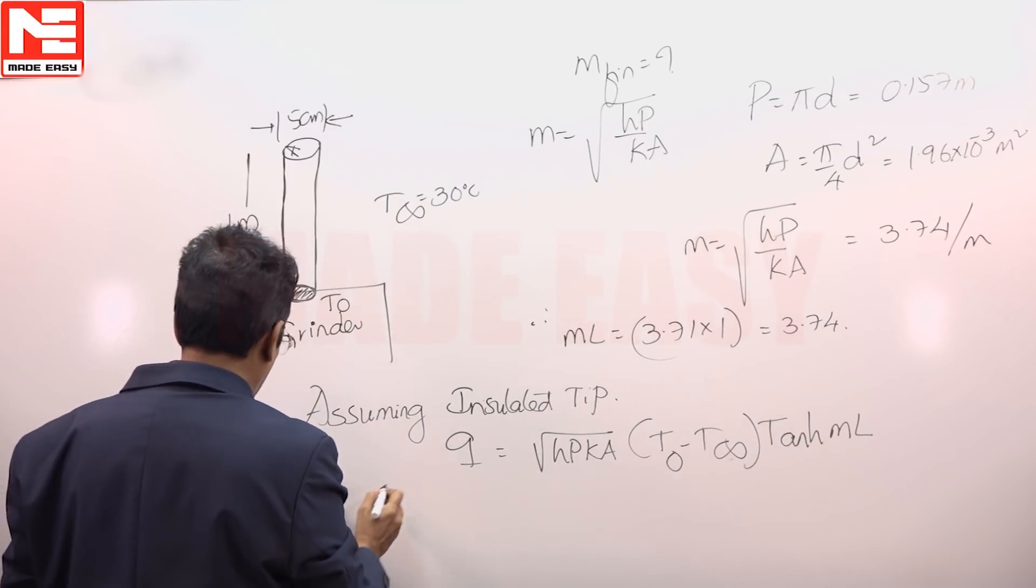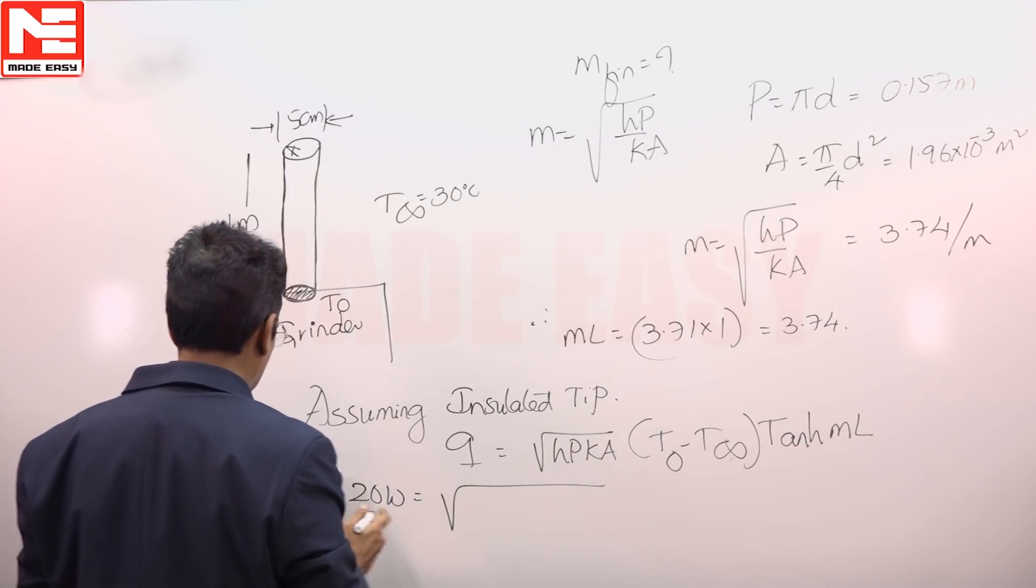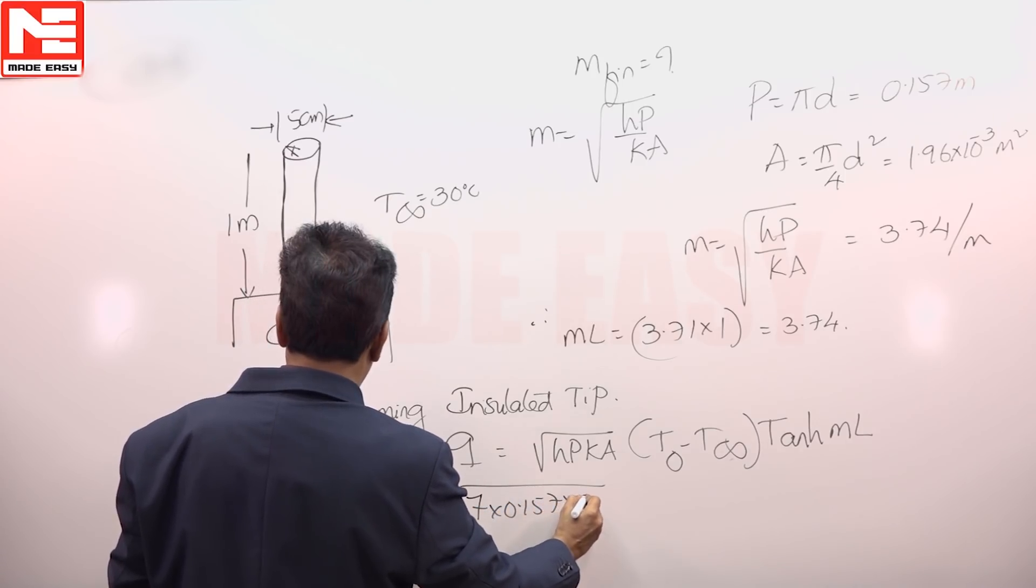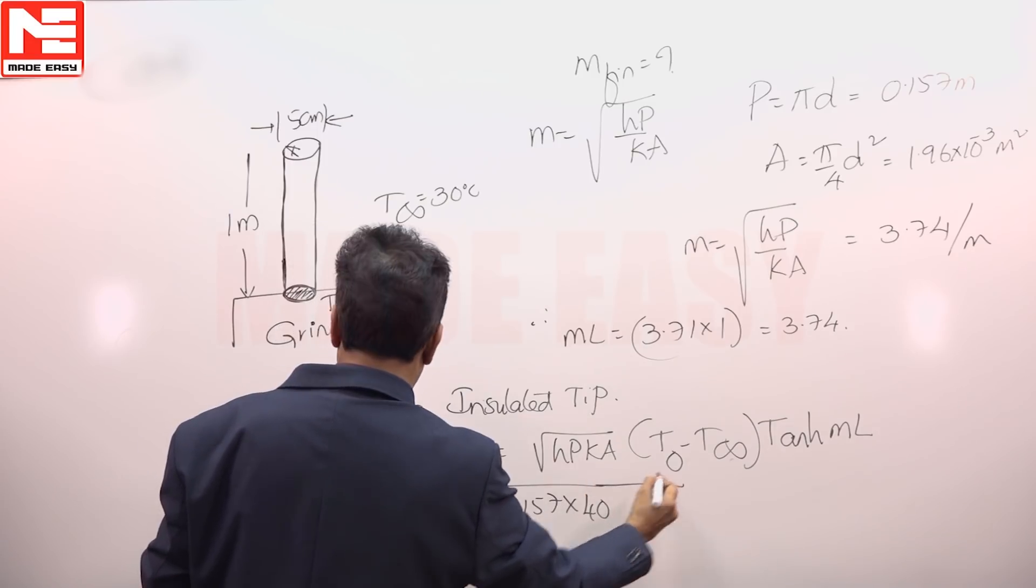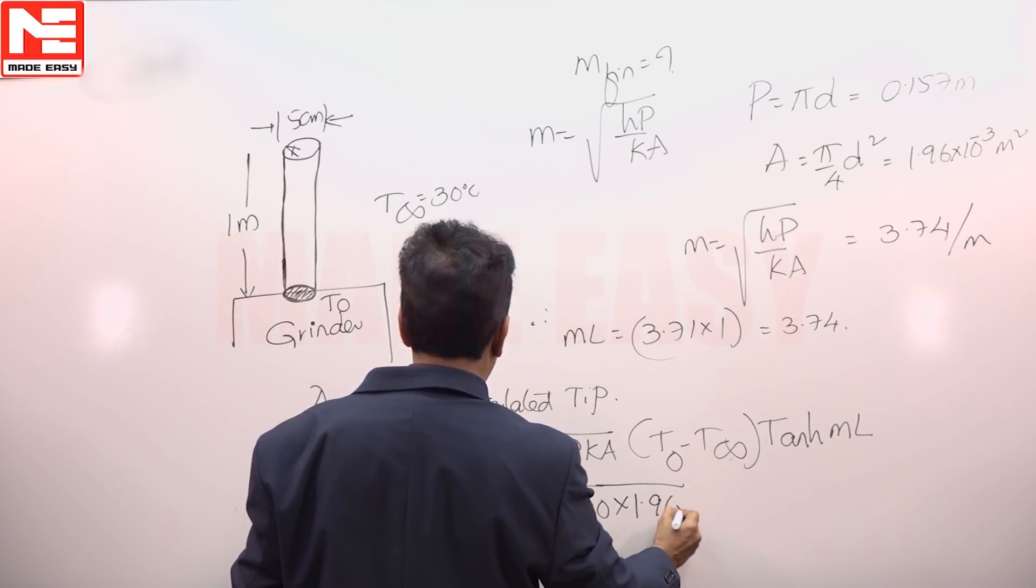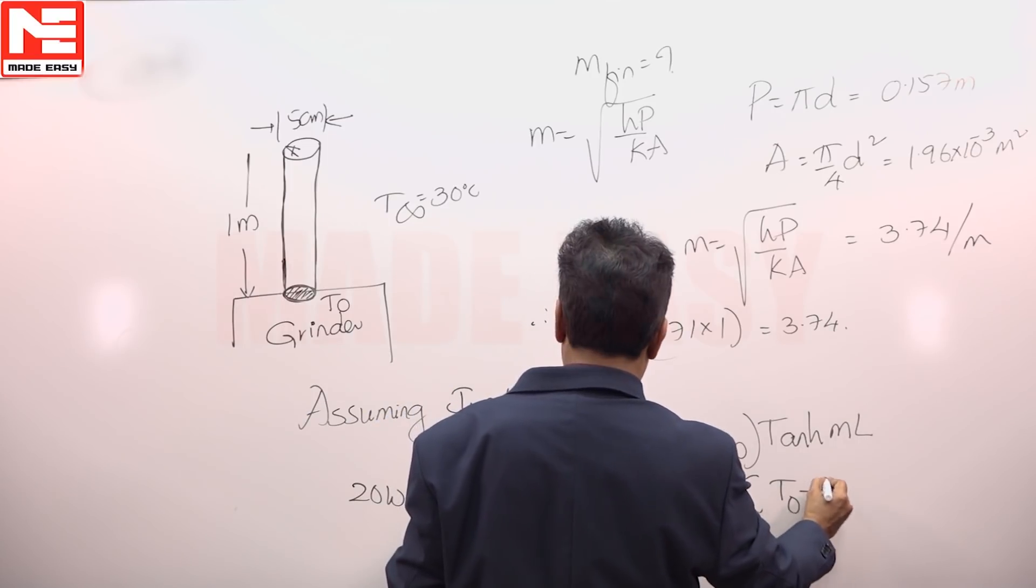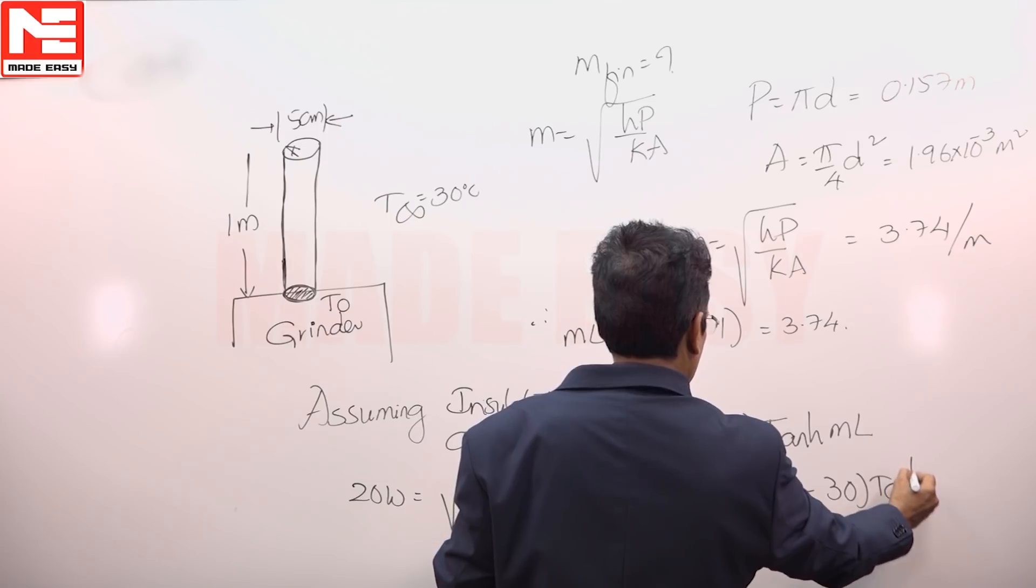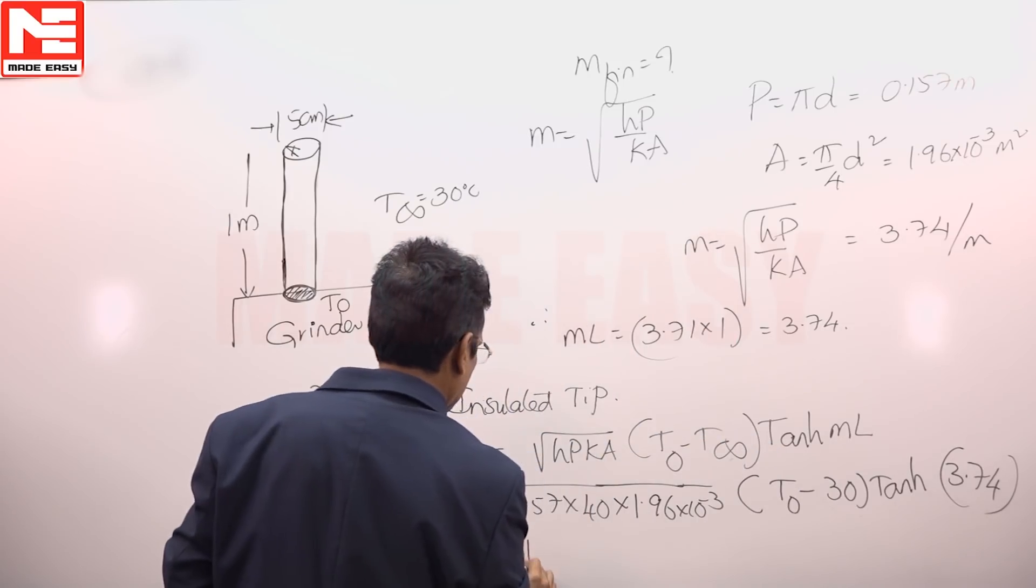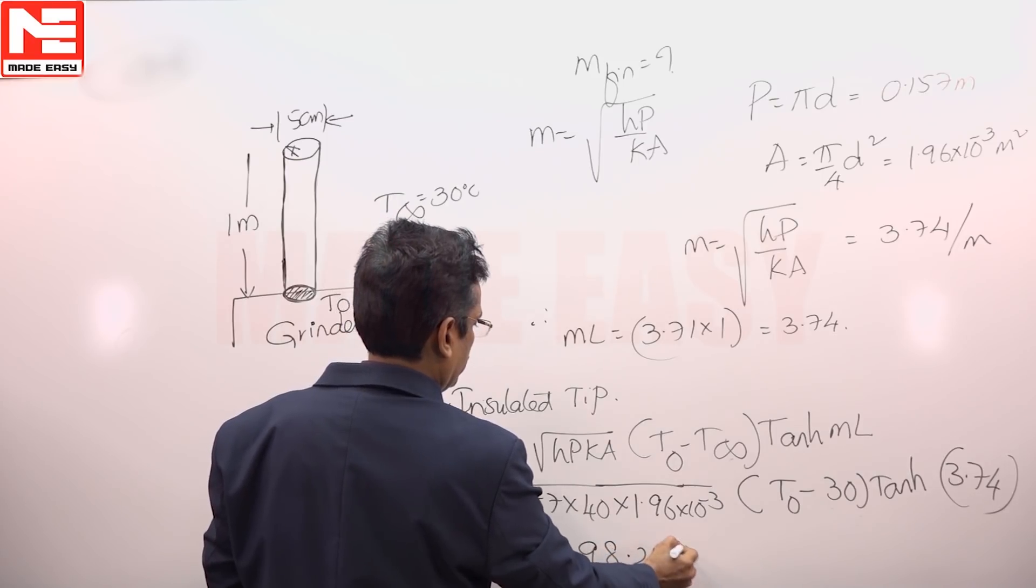So in this case, the mechanical energy dissipated temperature is 20 watt. H value is given as 7. Perimeter is 0.157. K is 40. Area is 1.96 × 10⁻³. T naught we do not know, that is at the grinding wheel. Ambient is 30. Hyperbolic tan 3.74. That temperature of the rod at the grinding wheel is 98.212 degree Celsius.